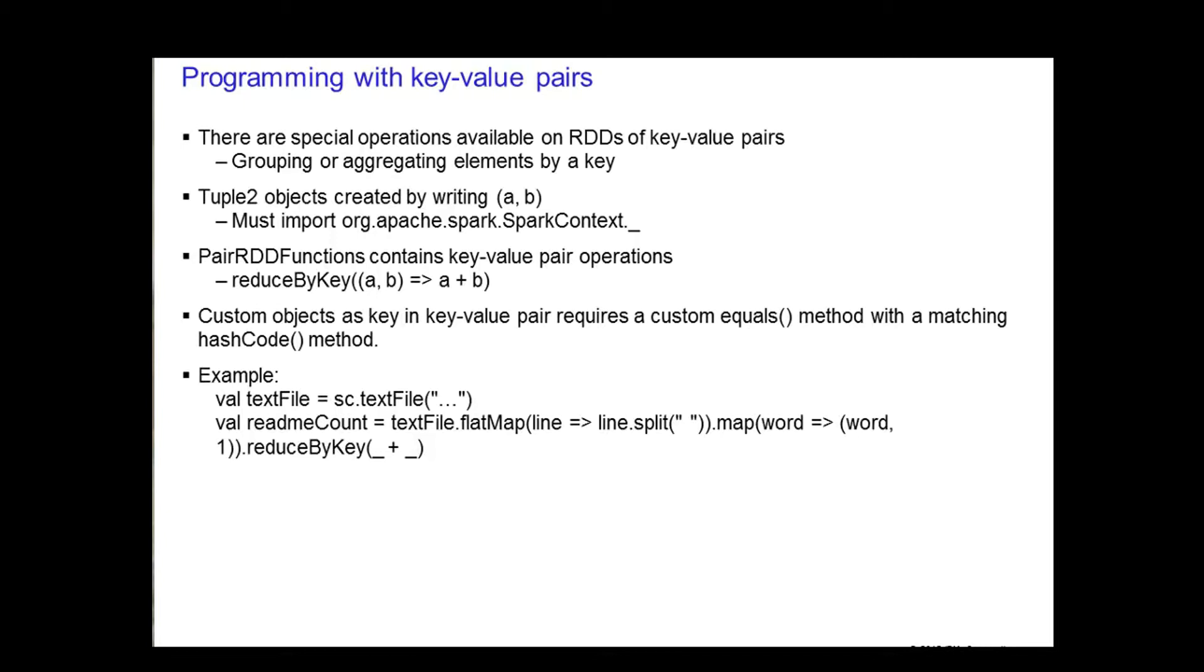If you have custom objects as the key inside your key value pair, remember that you will need to provide your own equals method to do the comparison as well as a matching hash code method. So in the example, you have a text file that is just a normal RDD, then you perform some transformations on it and it creates a pair RDD which allows you to invoke the reduce by key method that is part of the pair RDD functions API.